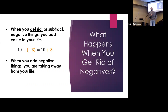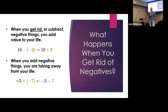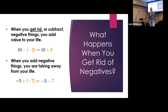When you add negative things, you're taken away from your life. The example is negative 5 plus negative 7. Here we're not subtracting negative 7 — we are adding negative 7. When we add negatives, that's actually subtracting, that's actually taking away. When you add negative things to your life, you're going to obtain negative results; you're going to go in the wrong direction. But when you get rid of negatives — when you take away those negative things from your life — you're going to achieve positive results. We need to understand that as followers of Christ.